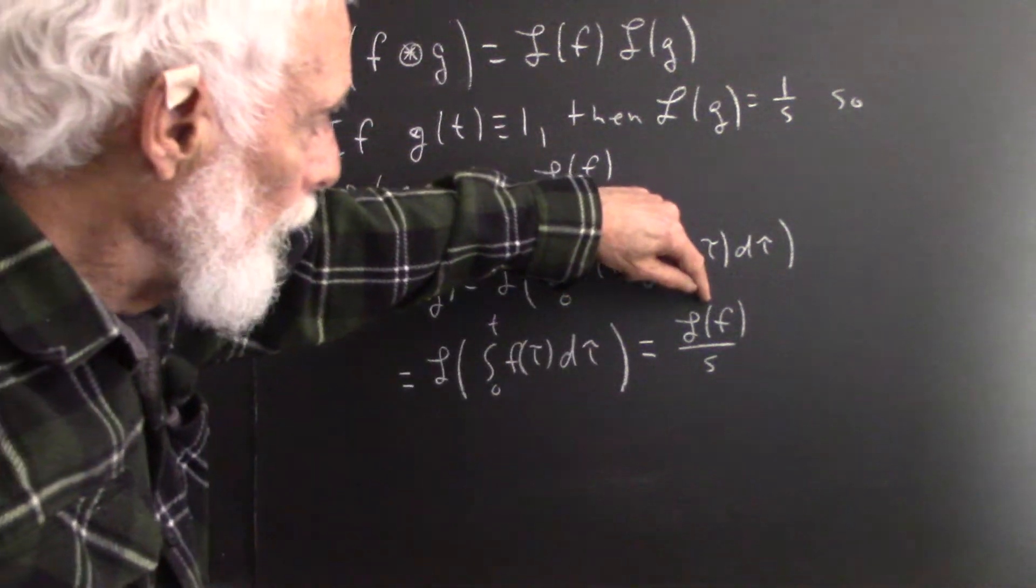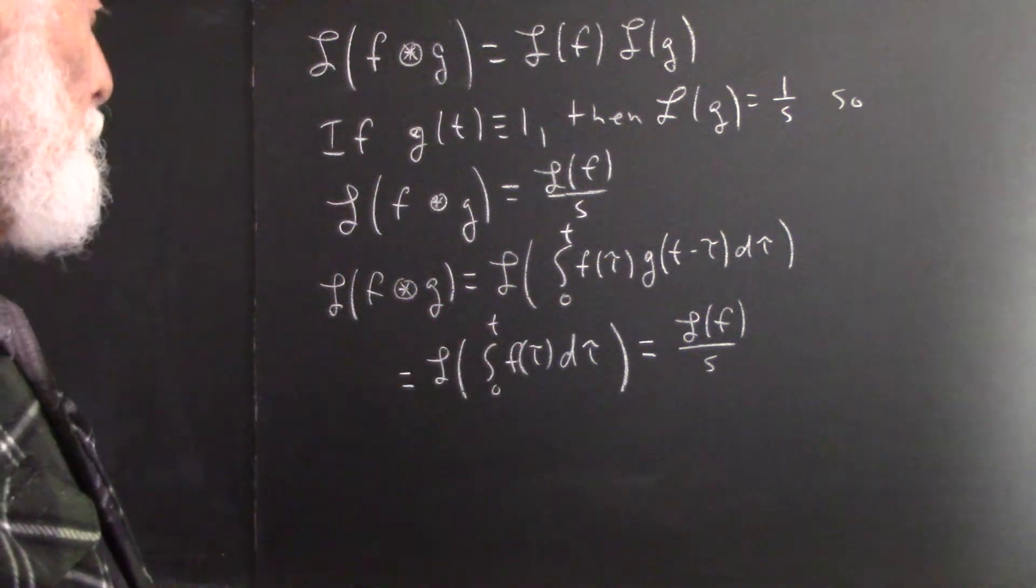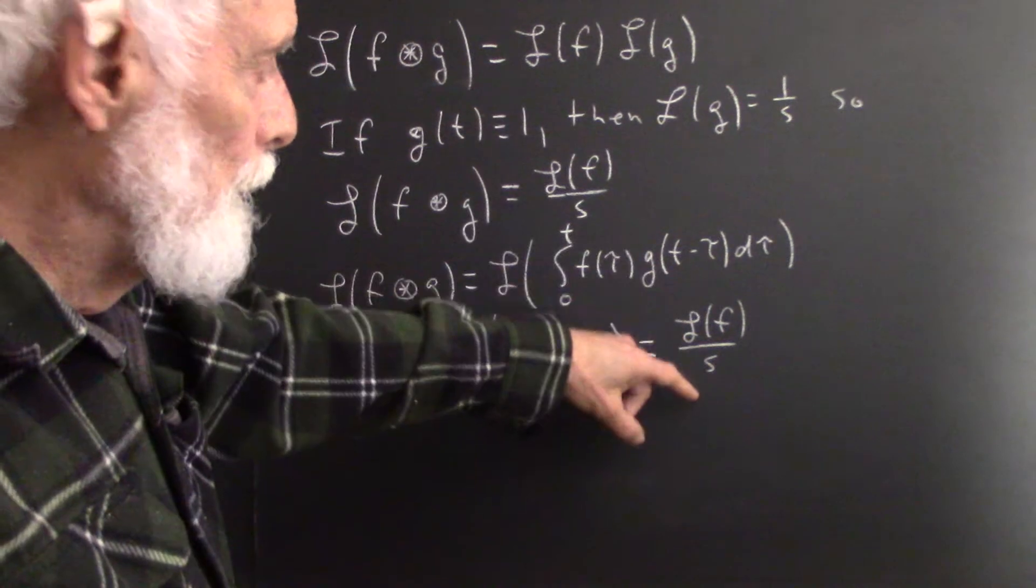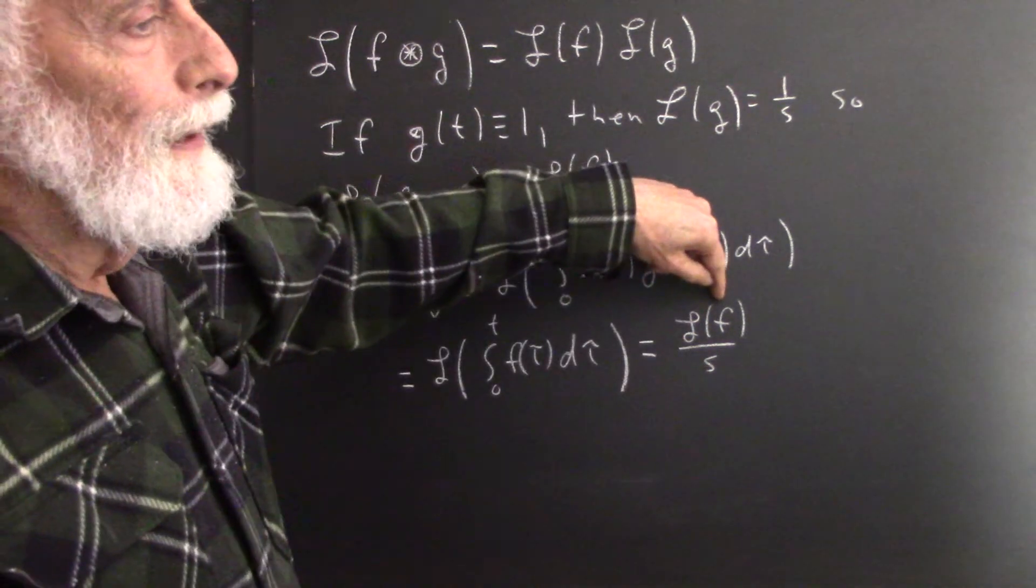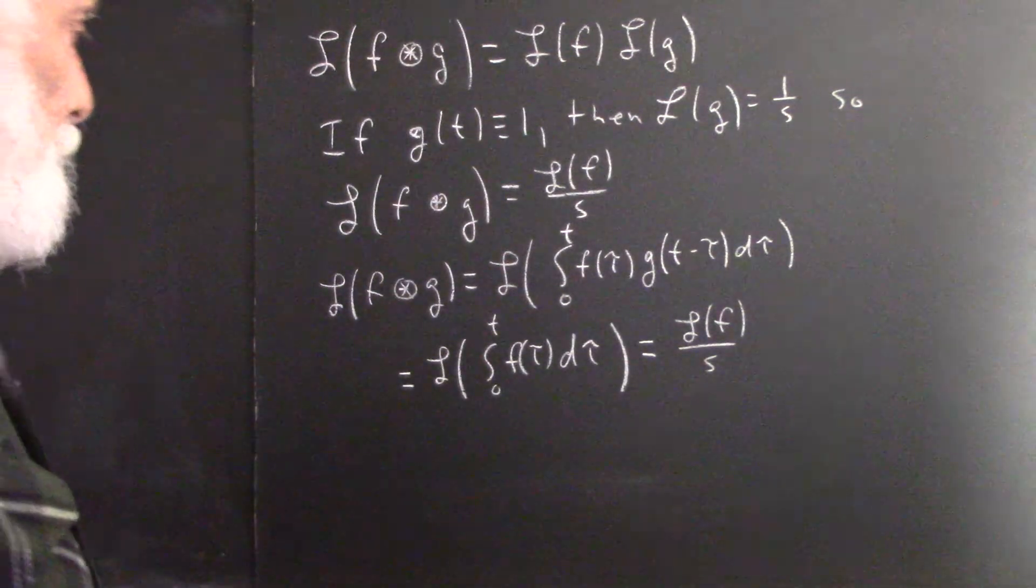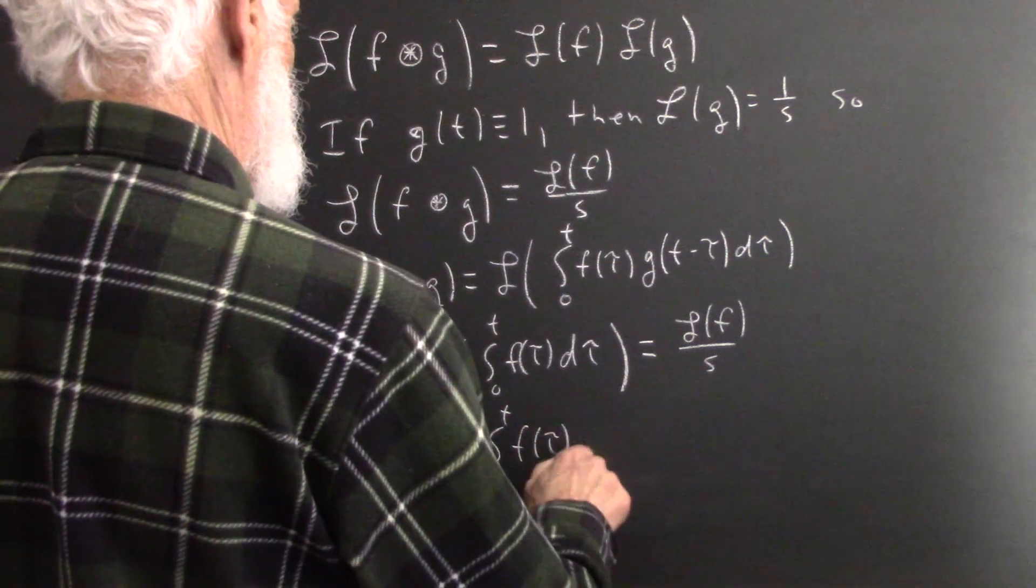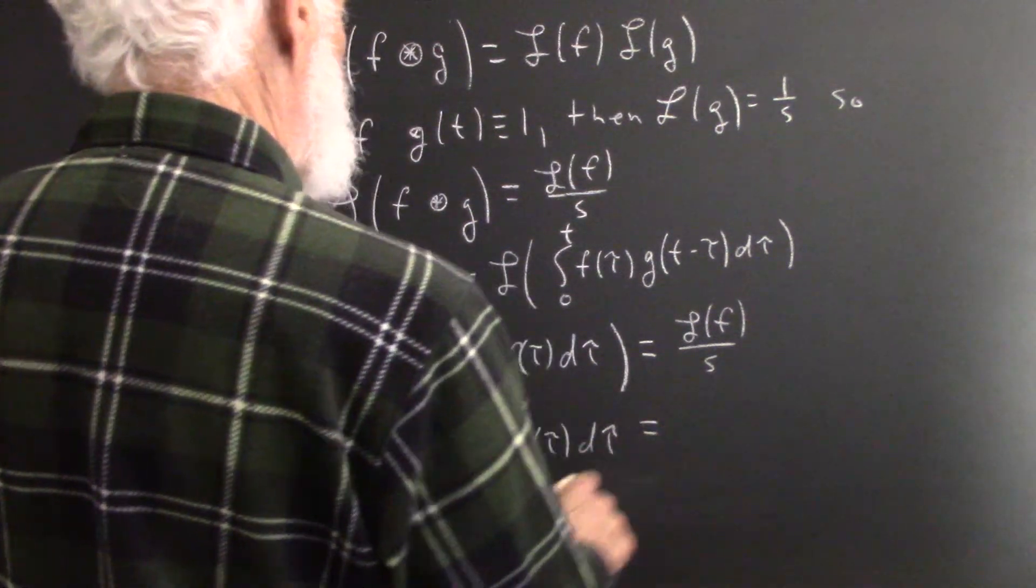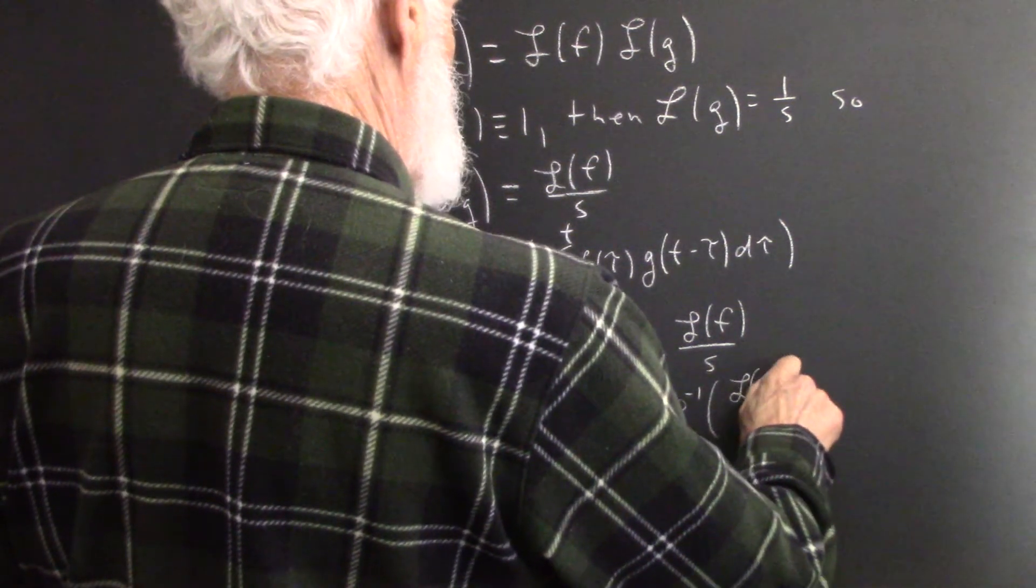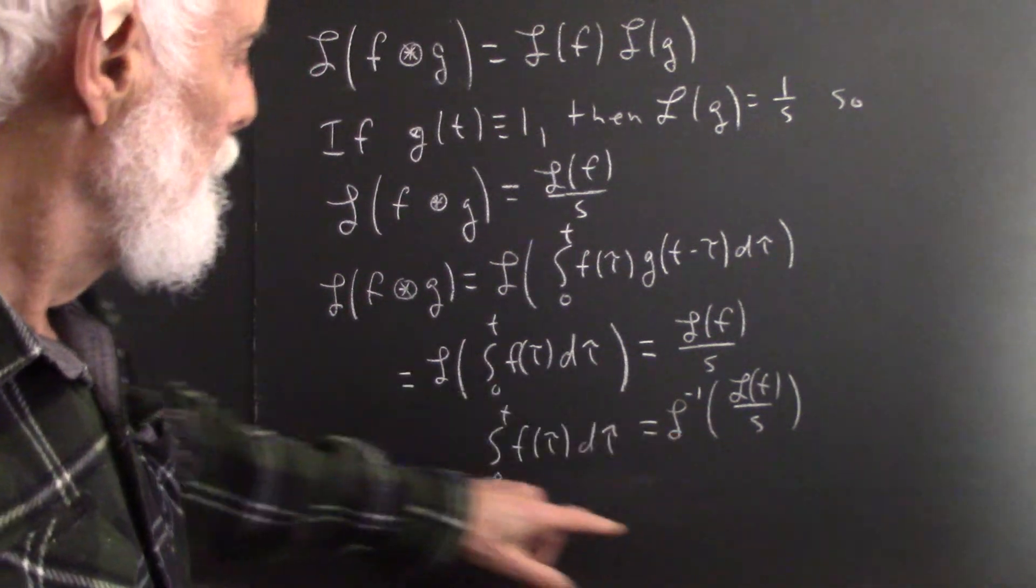Now, if f happens to be a function of which we know the Laplace transform, then we can find this integral just by inverse transforming L over s. If f has a transform which divided by s is inverse transformable, then we can evaluate the inverse transform of L over s by just doing this integral.